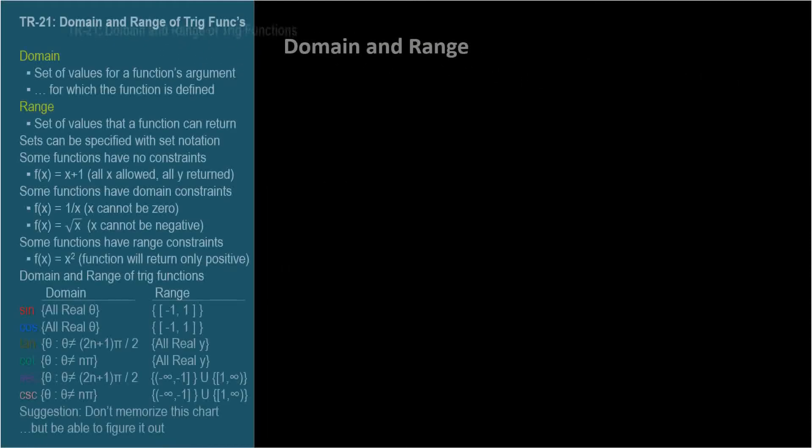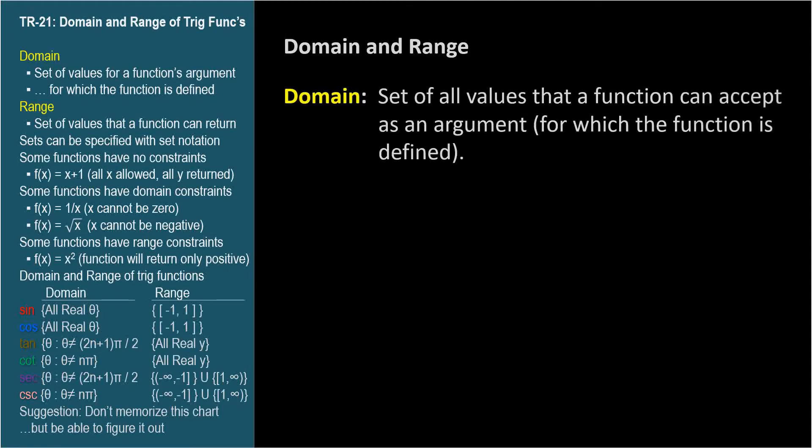The domain of a function is the set of values that function can accept as an argument. The range of a function is the set of all values that a function can return as output.